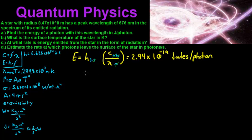For part B, it says: what is the surface temperature of the star in Kelvin? For that one we're going to be using Wien's displacement law. It's real simple — you just have wavelength max times temperature equals 0.2898 times 10 to the negative 2. So all we have to do is set T equal to that number divided by our wavelength.